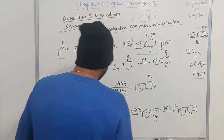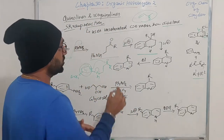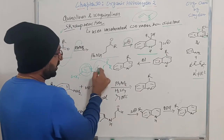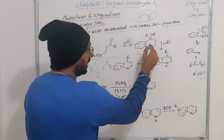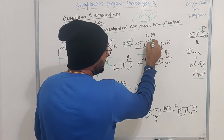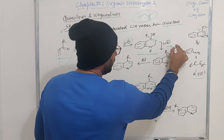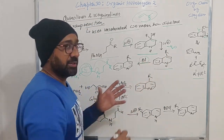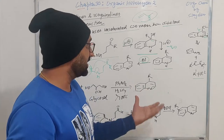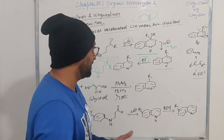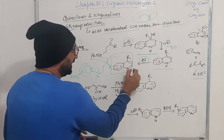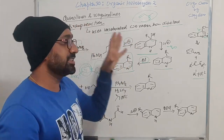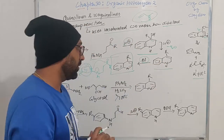Coming back to the reaction: after the conjugate addition, you expose it to the acid. After that, what you have is simply the elimination of water. When you oxidize this — which can be done with any oxidizing agent such as DDQ or nitrobenzene — you end up getting the desired quinoline. This is a very elegant strategy for the synthesis of these particular molecules.